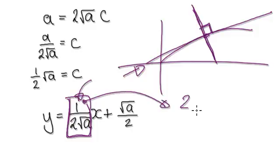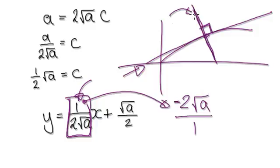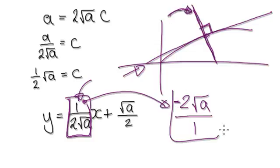you would take the negative reciprocal of this. So take the reciprocal, and then stick a minus in front of it. The gradient of the normal line would be this, and for some reason it would be at 90 degrees.